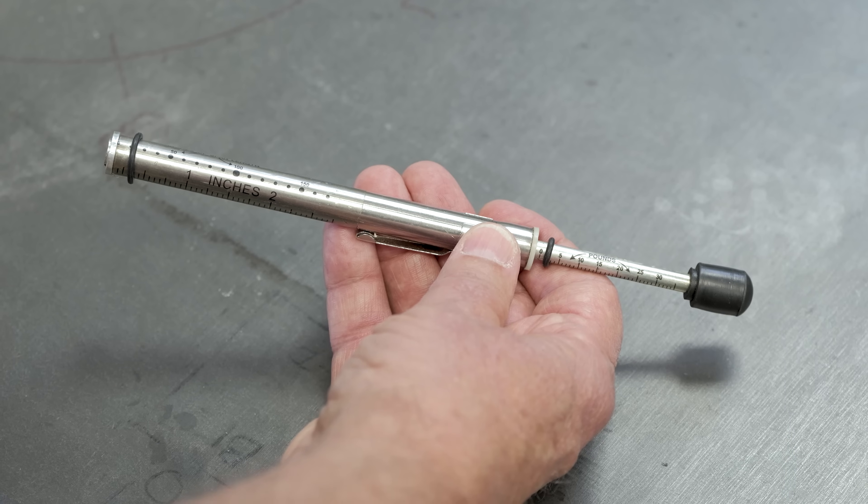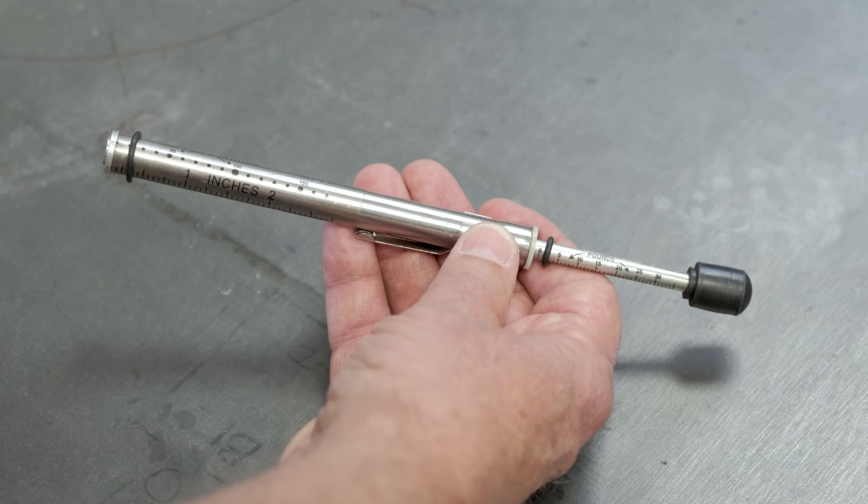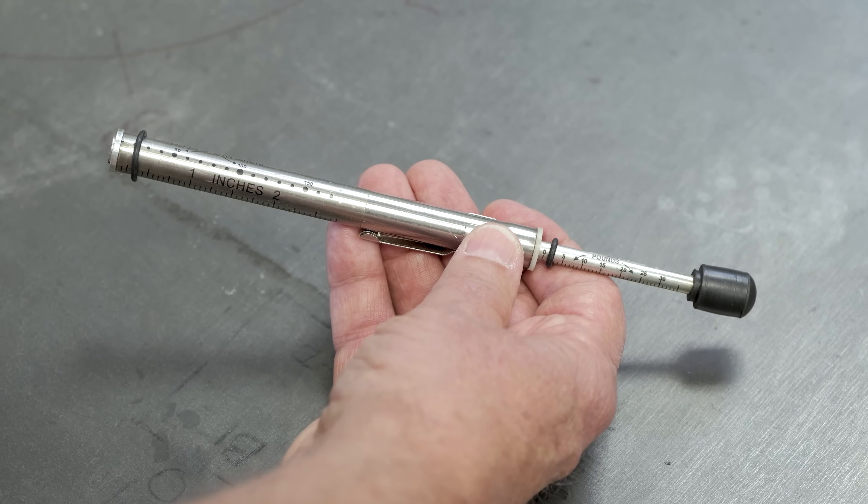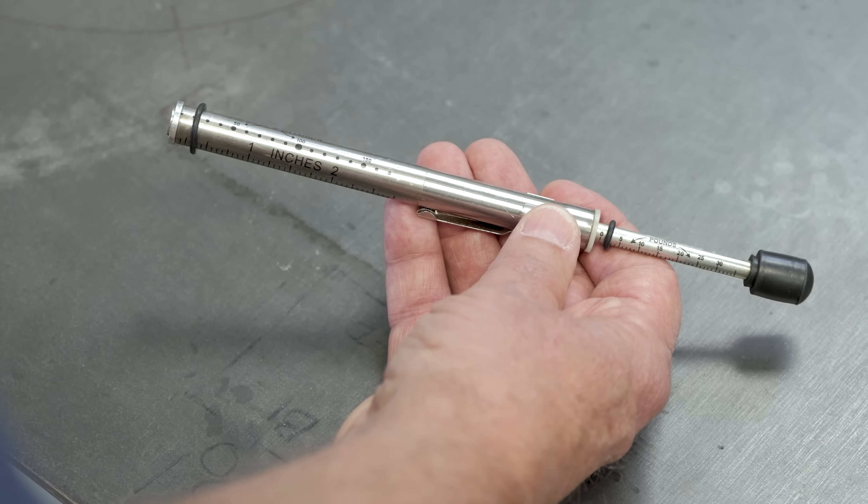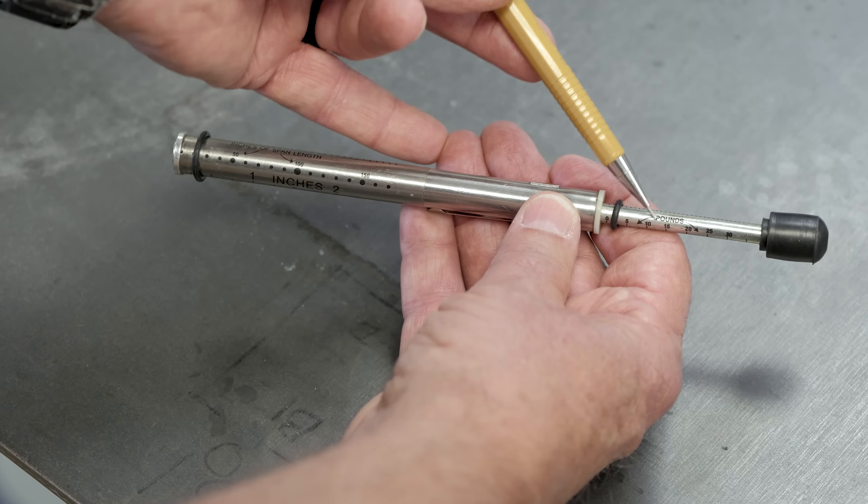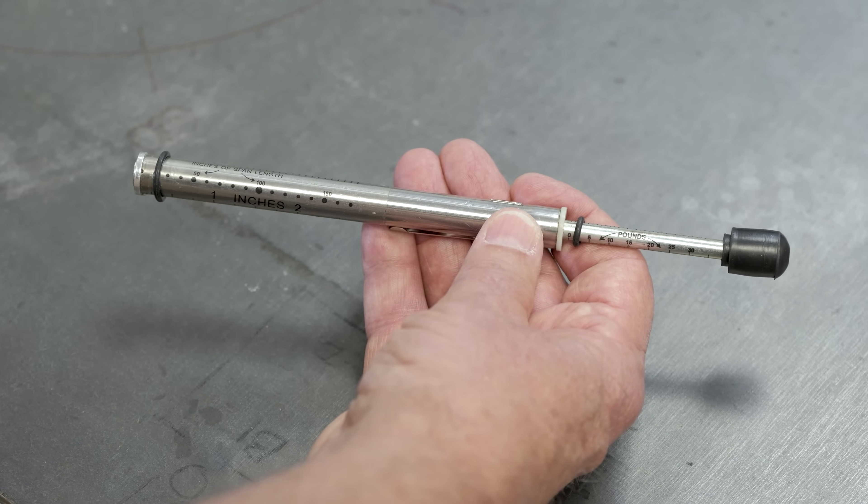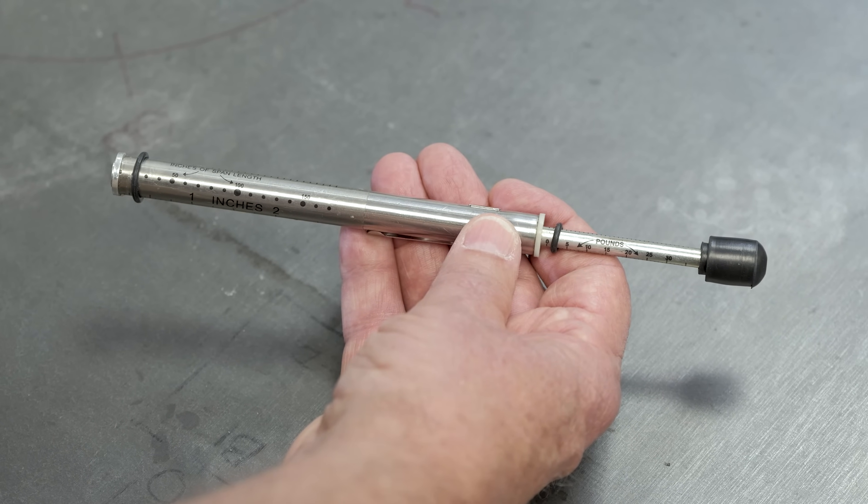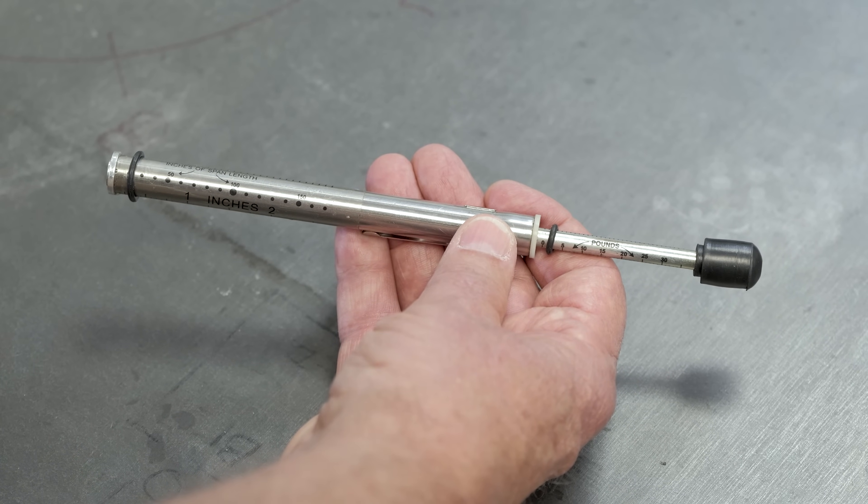So a belt tensioning gauge is used to measure belt tension. Two things that you need to set. One is the deflection force or how many pounds of pressure we put against the belt to make it deflect. The other one is the deflection distance.